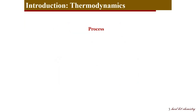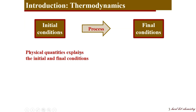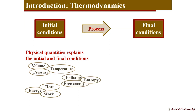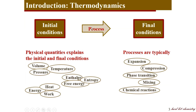A process is something which changes the initial form of a system to its final form. The initial and final conditions of the system are characterized by certain physical quantities such as volume, pressure, temperature, heat, energy, and work. Processes are typically expansion or compression of a gaseous system, phase transitions, crystalline transformations, melting of a solid, mixing of components, or chemical reactions — so processes are of wide variety.